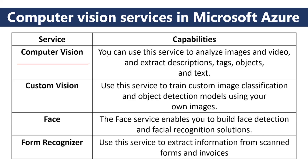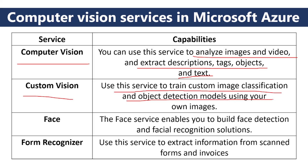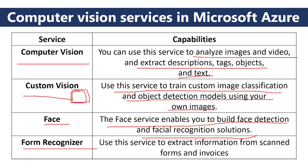Let us summarize computer vision. You can use the service analyzer to analyze images and video and extract descriptions, tags, objects, and text. In custom vision, the service trains custom image classifications and object detection models. Objects are detected using bounding boxes. The face service enables you to build face detection and facial recognition, detecting human faces. Form recognizer lets you extract information from scanned forms and invoices — analyzing text from images.